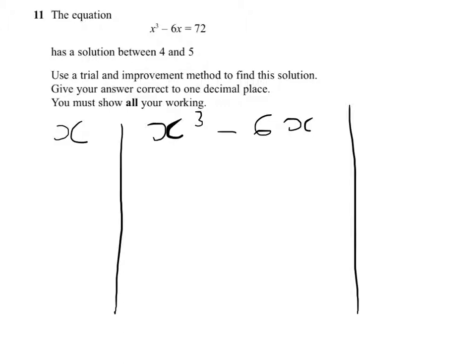We'll start with 4.5. What we'll need to do is use our calculator, cube 4.5, and then take away 6 lots of 4.5, see what the answer is, see whether it's bigger or smaller than 72. And we see that that comes to 64.125.